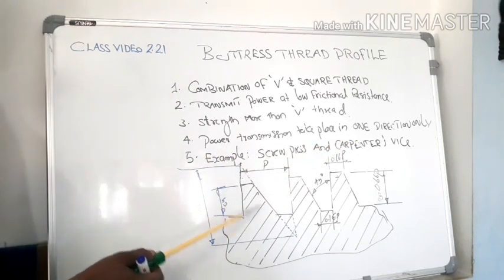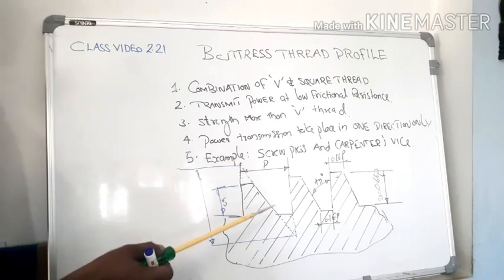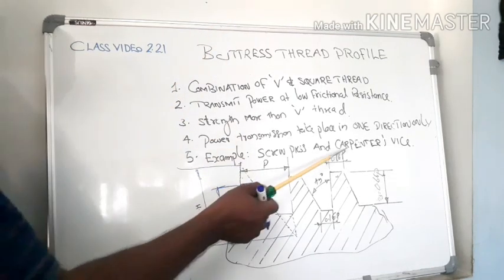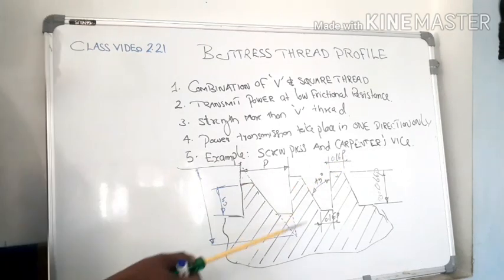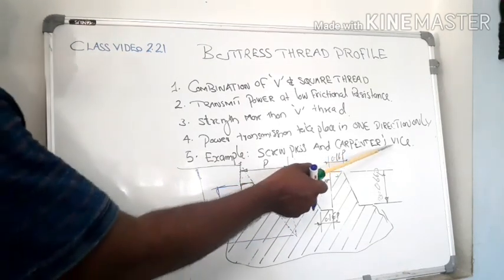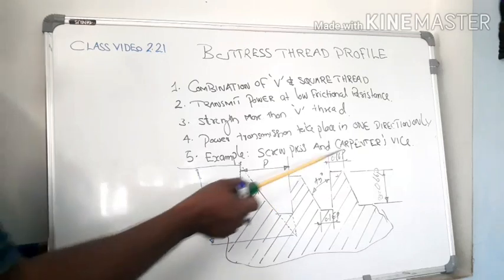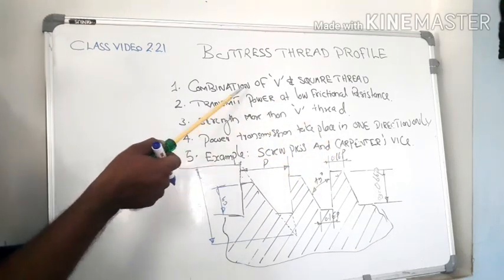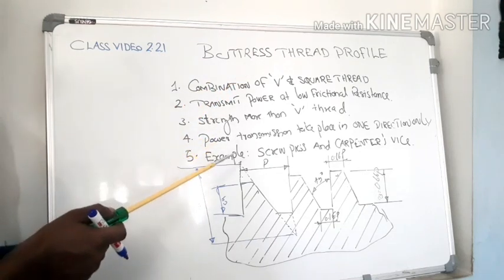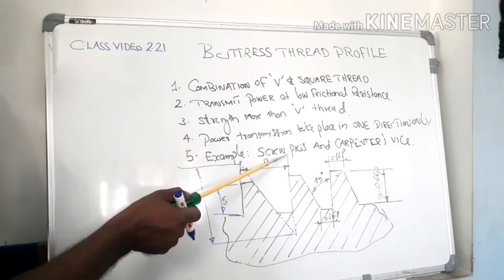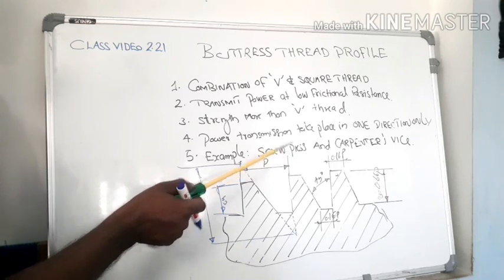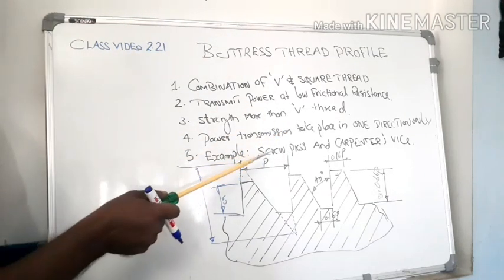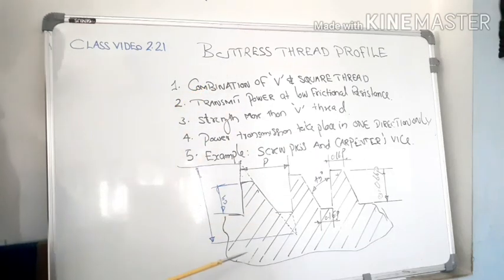That means power transmission takes place in one direction, especially in the case of carpenter's screw vice. That means a vice is a work holding device mainly used by carpenters. Such type of thread profiles are made of buttress threads. And one more example is screw press. In the case of screw press, that thread is made of buttress thread.